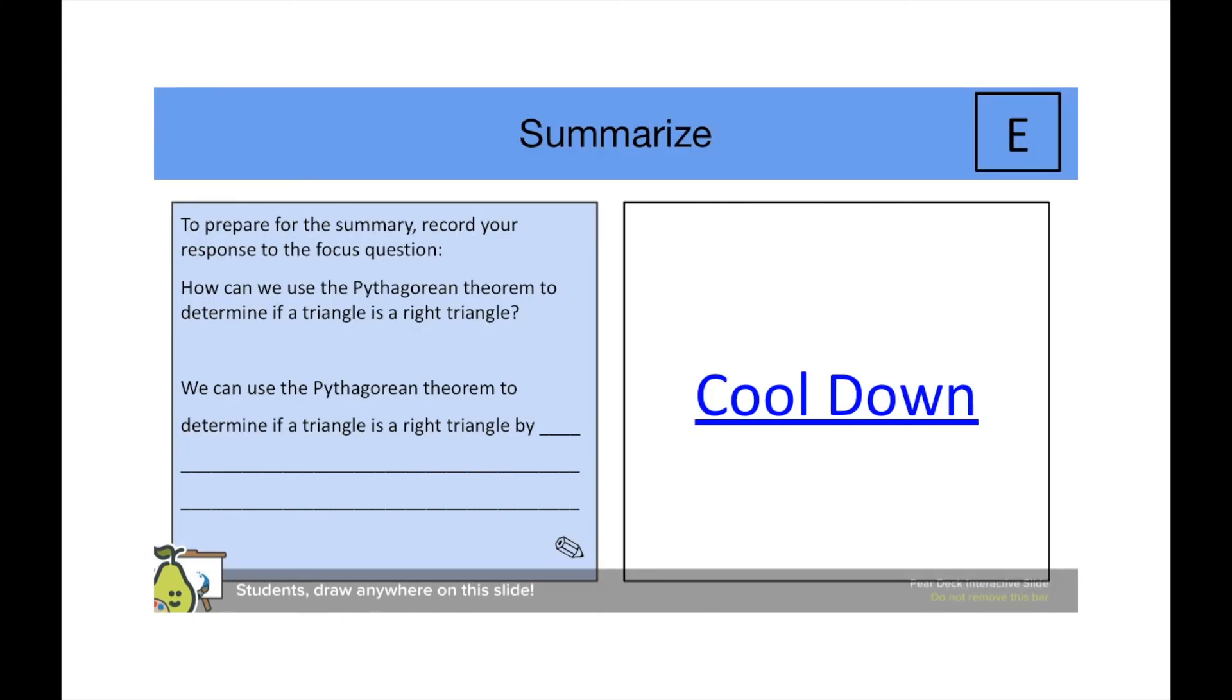Students can summarize by responding to the focus question, how can we use the Pythagorean theorem to determine if a triangle is a right triangle. You can support students with disabilities by giving them a sentence starter, so they can focus on the content of their answer rather than the sentence structure, and then they can complete the cooldown.